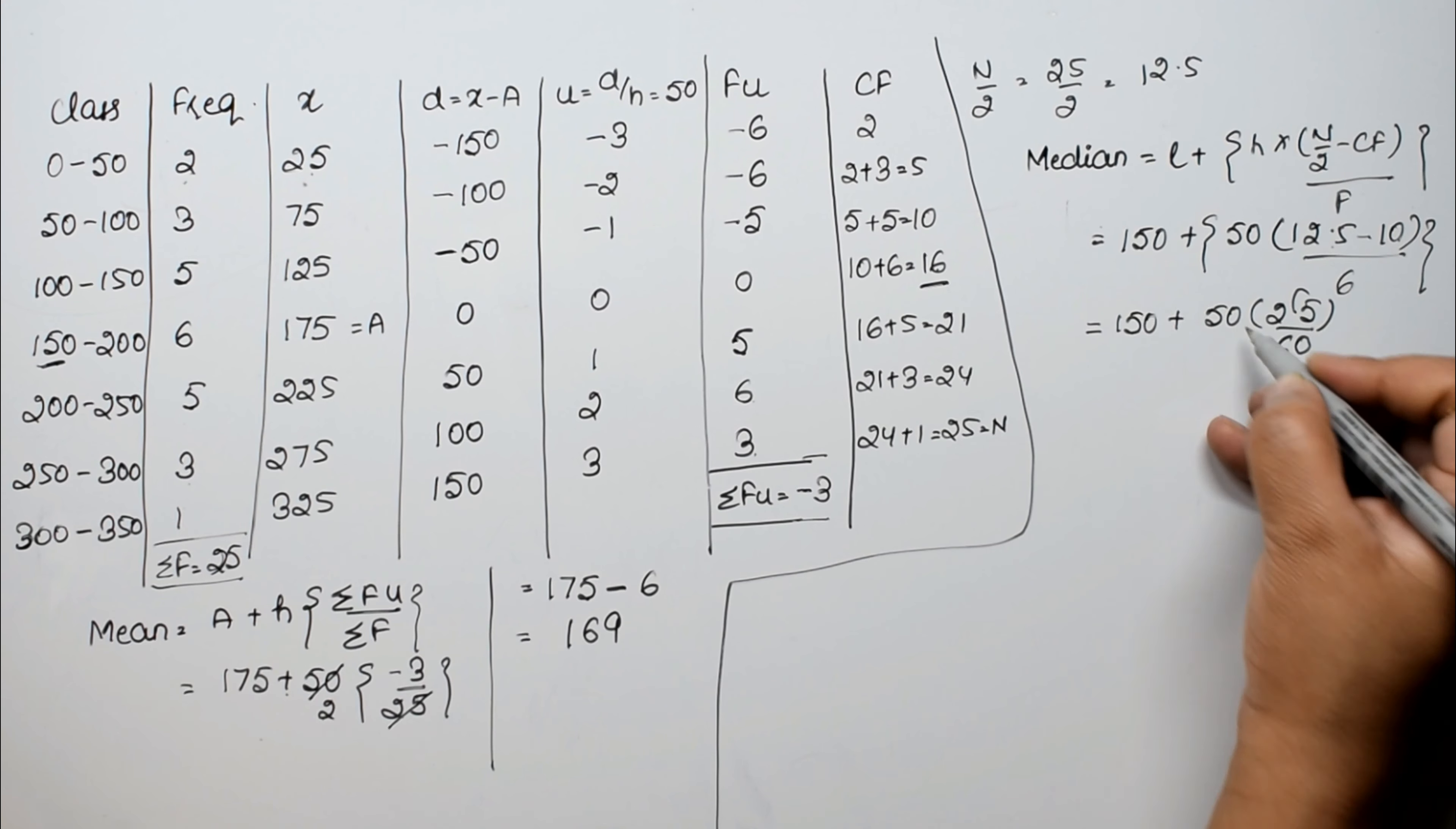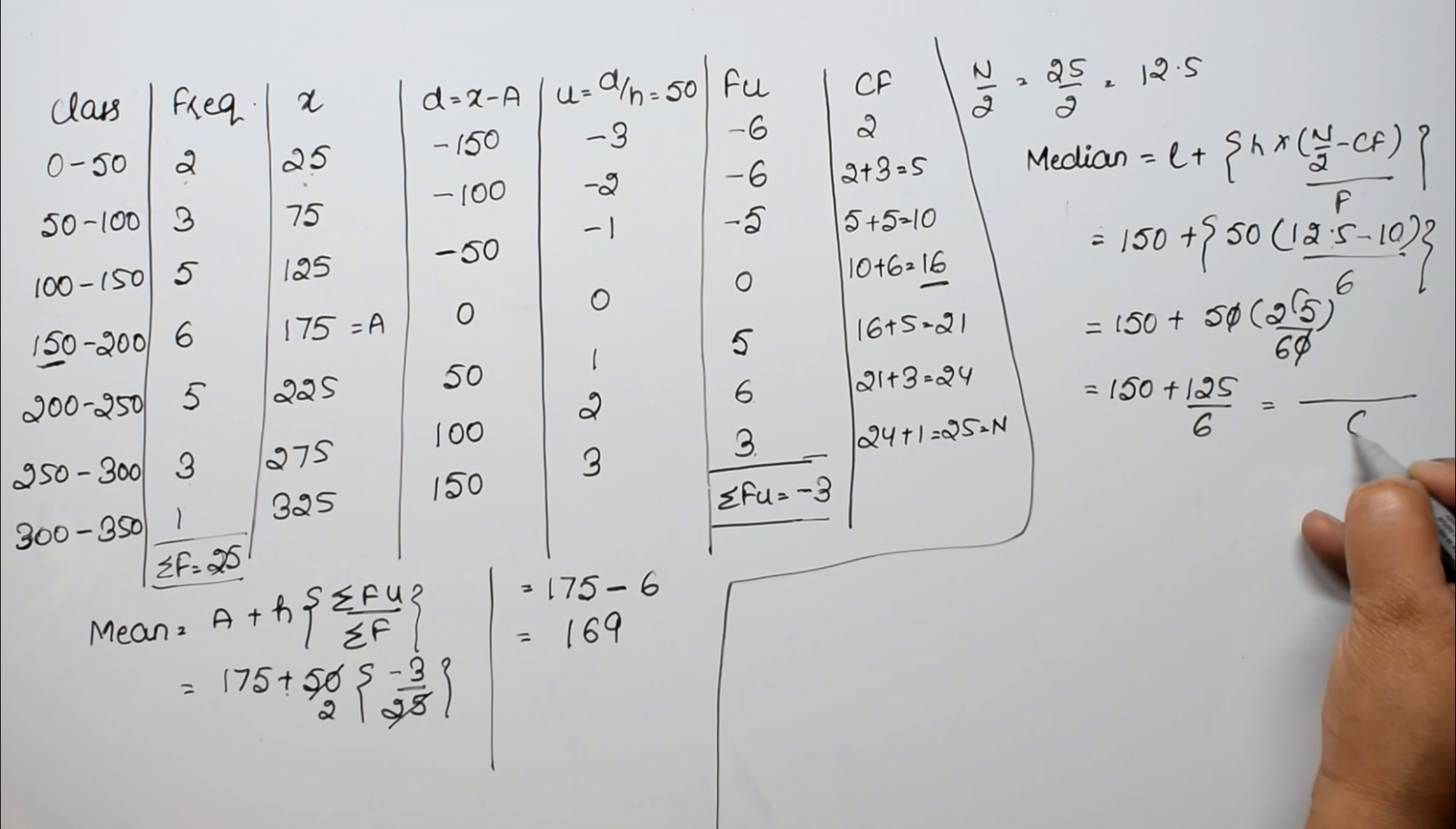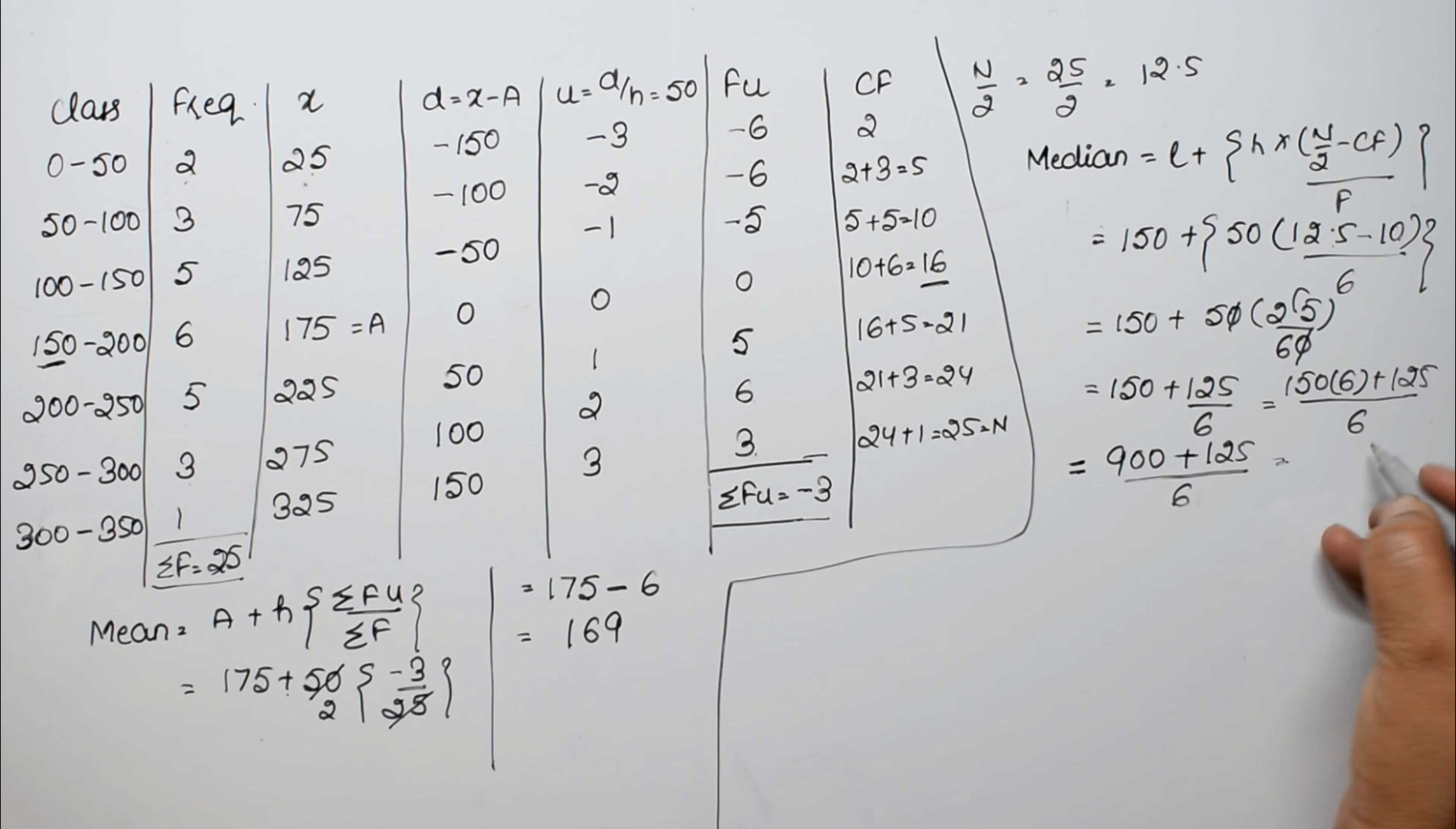Point removed, one zero added, one zero cancelled with zero. This becomes 150 plus 25 by 5 is 125 upon 6. Taking LCM 6, so this becomes 150 into 6 plus 125. So see, this becomes 6 zeros are 0, 6 fives are 30, 3 carry, 900, plus 125 upon 6. So this is 1025 upon 6.